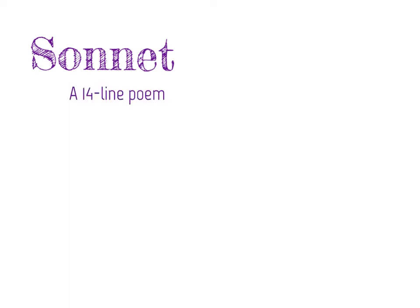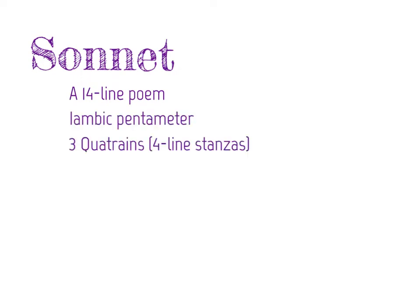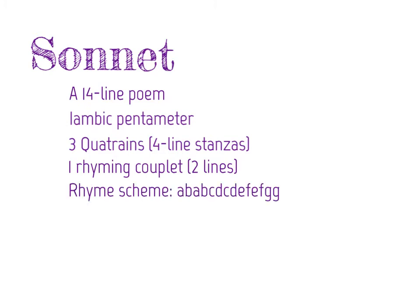A sonnet is a 14-line poem written in iambic pentameter — remember that's five da-dums — and contains three quatrains, or three four-line stanzas, and one couplet, which is two lines, with a rhyme scheme of ABAB CDCD EFEF GG.